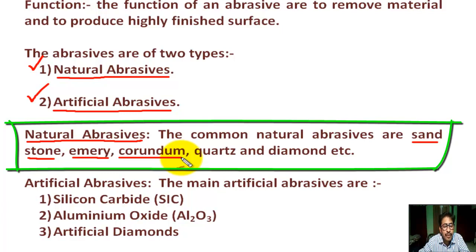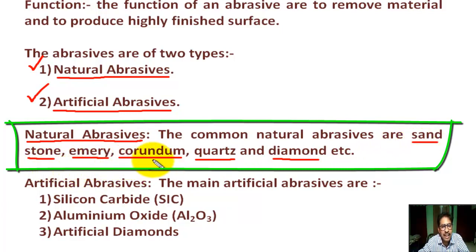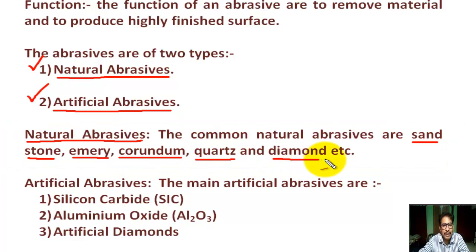Corundum - it is a rock-forming material in crystalline form of aluminium oxide. Quartz - a transparent rock crystal composed of silicon and oxygen atoms. And diamond, etcetera. So natural abrasives include sandstone, emery, corundum, quartz, and natural diamond.